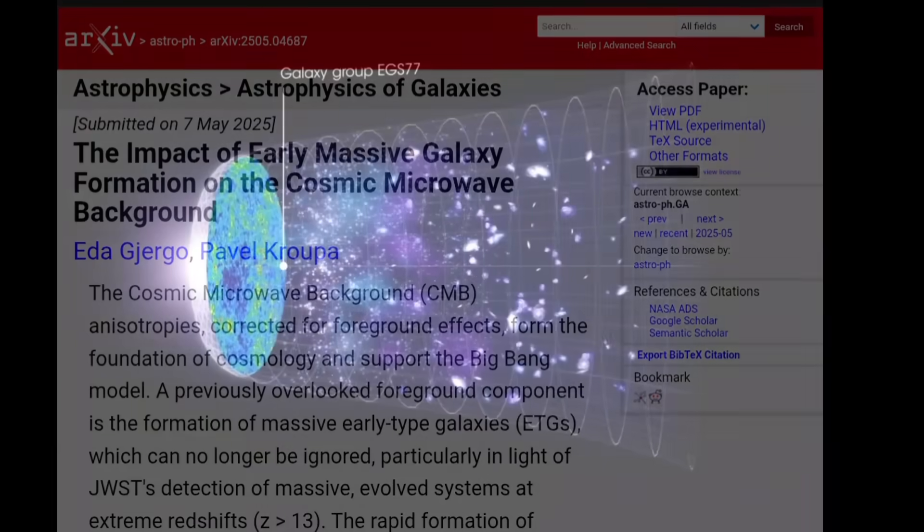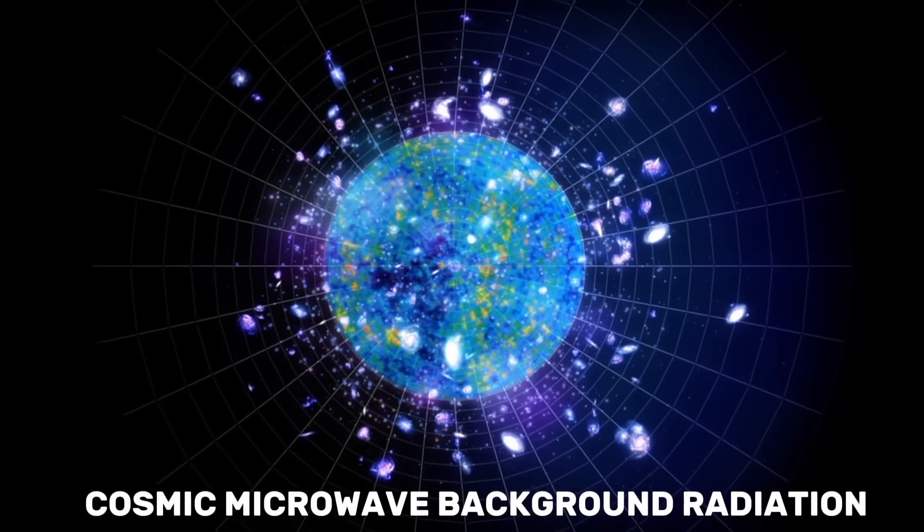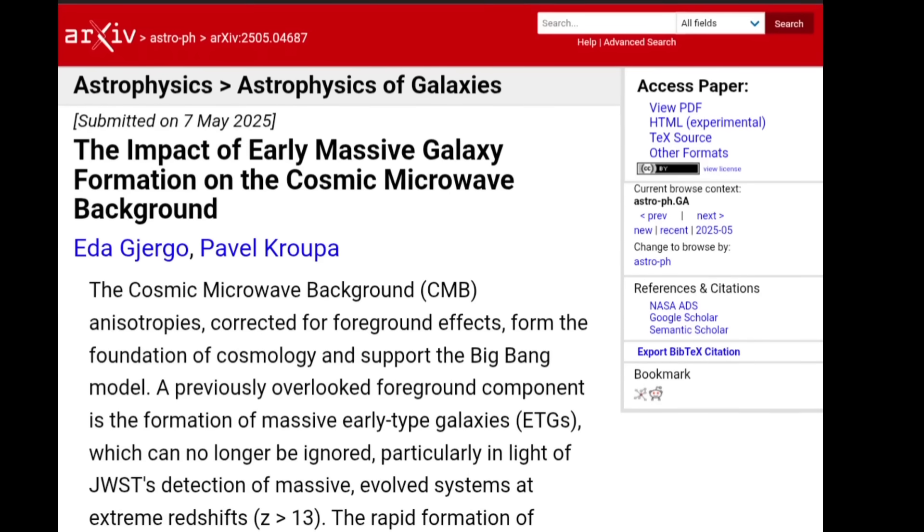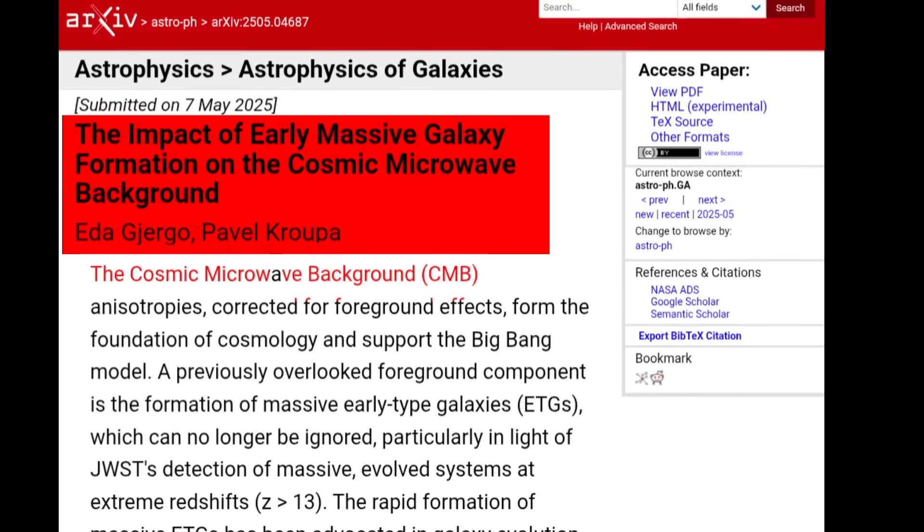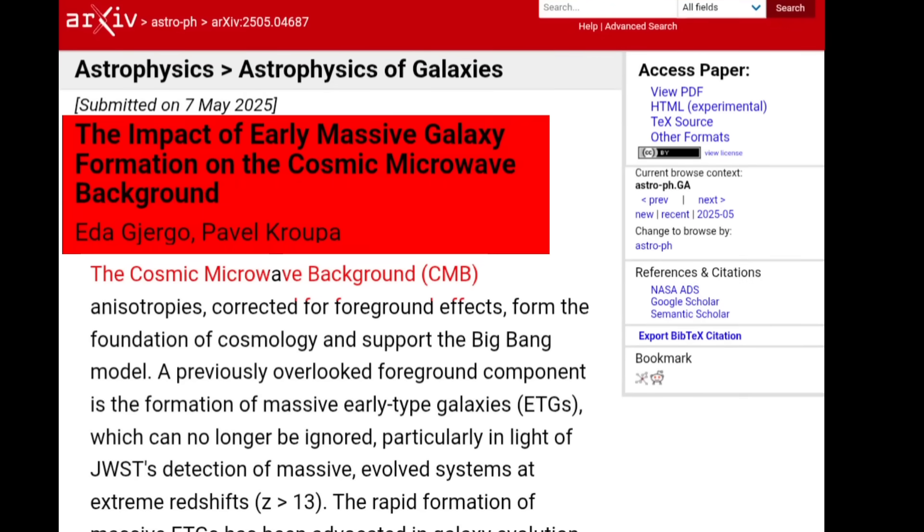But a new research suggests that the CMB might not be the afterglow of the Big Bang at all. In this new study, researchers found that what we've been interpreting as the oldest light from the Big Bang might, at least in part or maybe even entirely, come from something else.